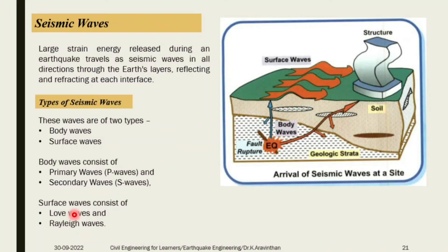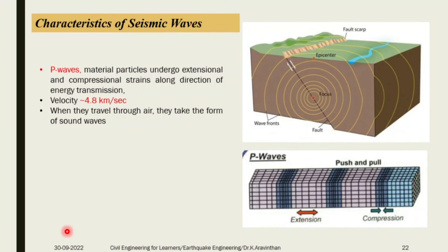Professor Love identified the different characteristics of the Love wave. Professor Rayleigh identified certain characteristics of earthquake waves, so it is called the Rayleigh wave. When understanding the characteristics of waves, the first wave is called the P wave - the primary wave. The fault gets sheared and from the focus, the earthquake is generated and transferred in all directions.